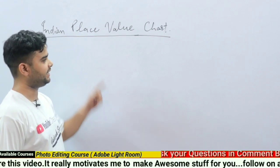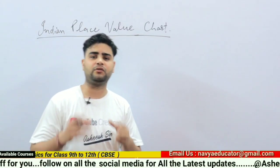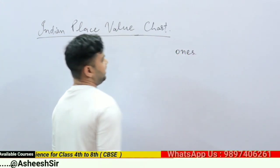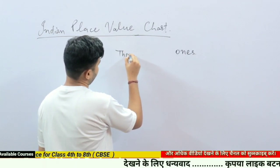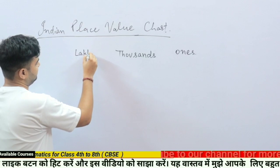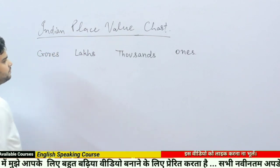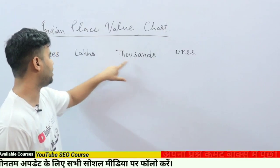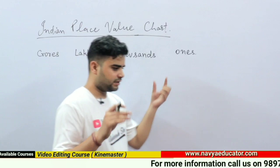We should know about its periods. The Indian place value chart is divided into four main periods. The first period is called Ones, the second period is called Thousands, the third period is called Lakhs, and the fourth period is called Crores.